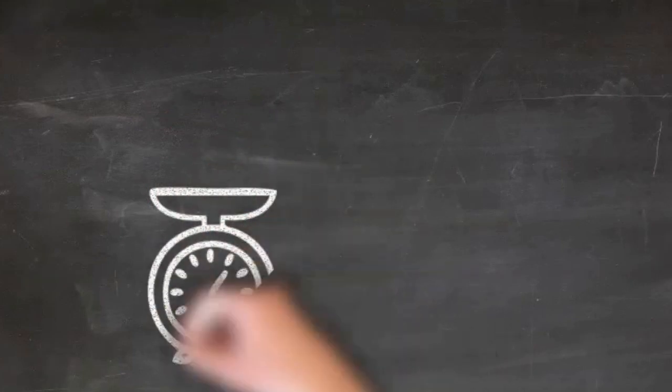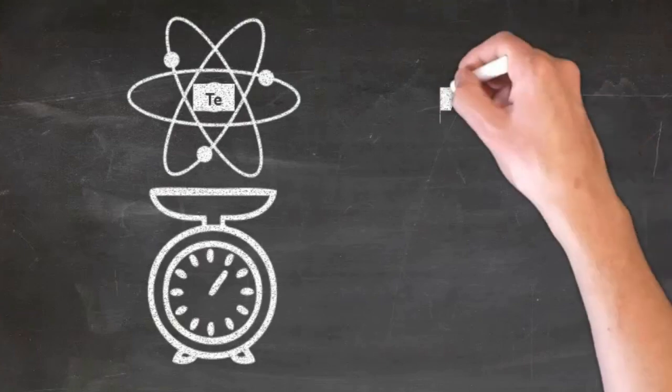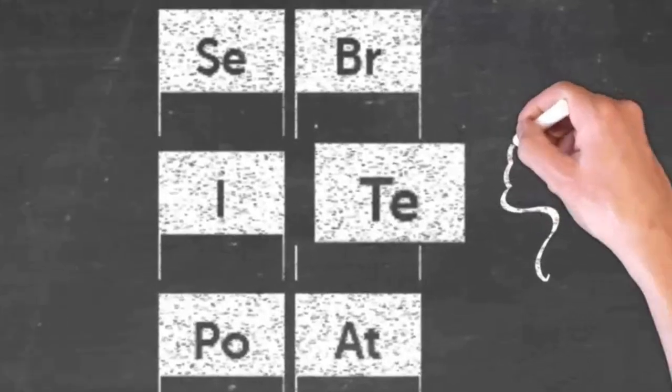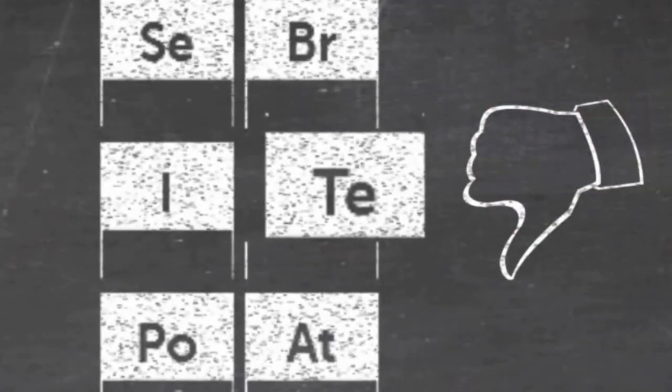Mendeleev arranged elements in columns and rows by their atomic weight, but some elements appeared in the wrong place in respect of their properties, so he moved them to where they fitted the pattern. This anticipated the discovery of atomic numbers, that's the basis for the much expanded periodic table we have today.